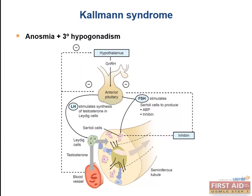Kallmann syndrome is characterized by anosmia, which is an inability to smell, as well as tertiary hypogonadism — a deficiency of GnRH secretion by the hypothalamus. Kallmann syndrome is a defect in the brain caused by improper migration of the GnRH-secreting neurons during development, as well as failure of migration of neurons in the olfactory placode, which is why we have anosmia. Low GnRH causes decreased synthesis of LH and FSH in the anterior pituitary, and this is why we have the hypogonadism.